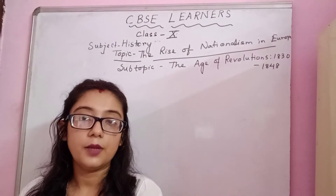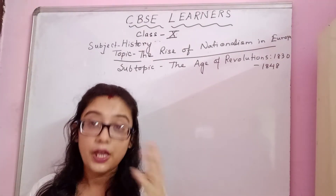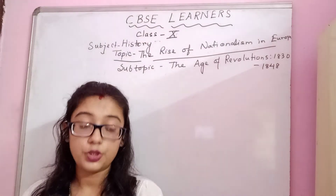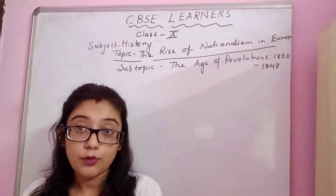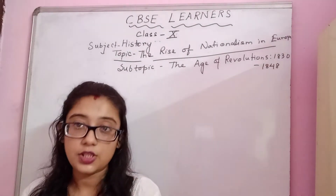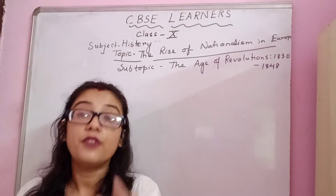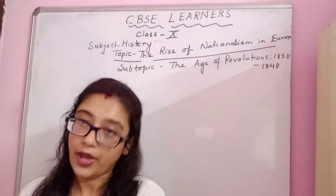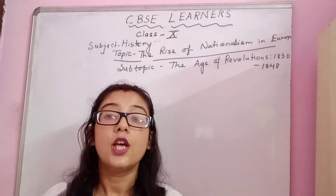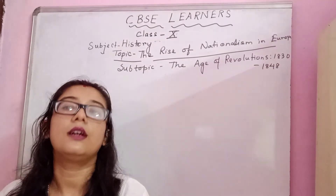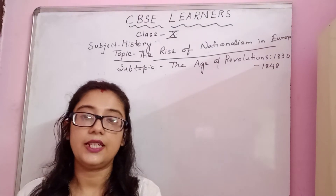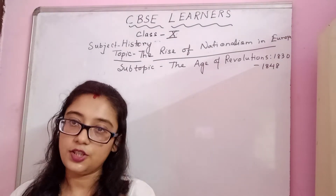We have learned about the four prints given by French artist Frédéric Sauru and about the French Revolution — how it started, what were the advantages, how the concept of nationalism emerged, and the concept of nation state, how it came into existence. Now it's time to learn about the age of revolution — in which period the revolution started and completed.